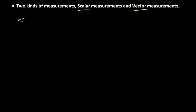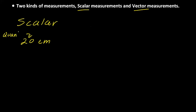First of all, we'll look at some scalar measurements. As an example, let me give you this scalar measurement: 20 centimeters. Like all scalar measurements, this scalar measurement has two parts. It has a quantity, and it also has a unit of measurement. There are lots of different scalar measurements, such as 10 kilometers, or about three degrees Celsius. That's a scalar measurement — it has a quantity and a unit of measurement.